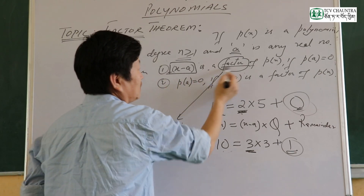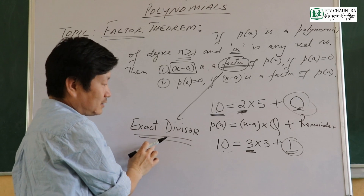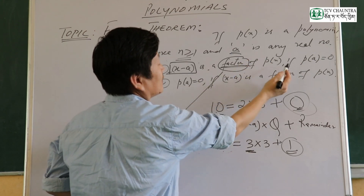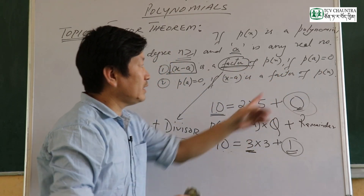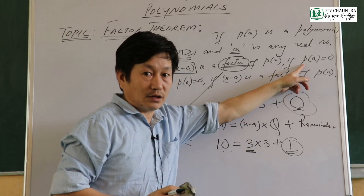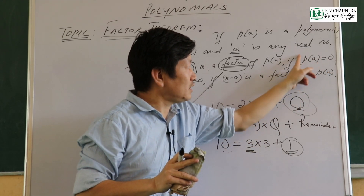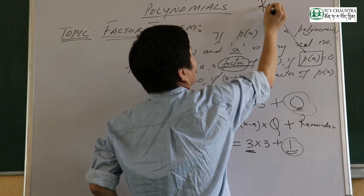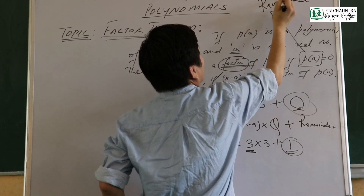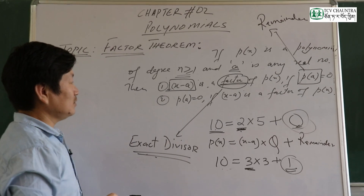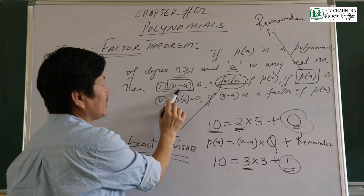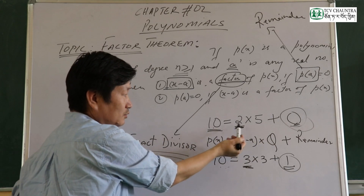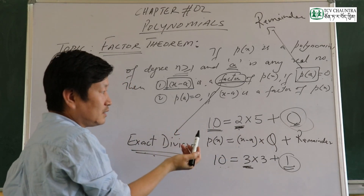X minus a is a factor — the factor means exact divisor. The factor allows exact division. This factor condition is: p(a) equals zero. P(a) will be our remainder. If the remainder is equal to zero, then p(a) equals zero means x minus a is a factor. When you divide, if the factor gives remainder zero, there is no remainder.